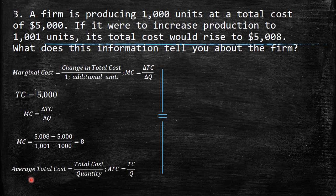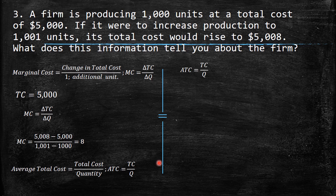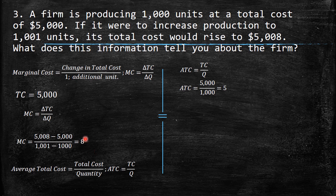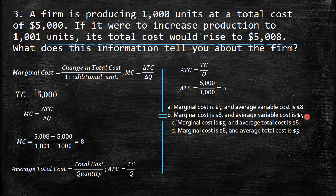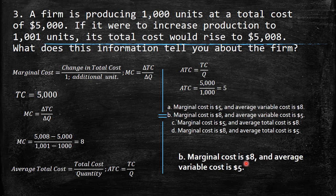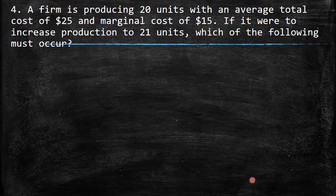For average total cost, ATC equals total cost divided by quantity: 5,000 / 1,000 = $5. So the marginal cost of the 1,001st unit is $8, and the average total cost at 1,000 units is $5. Looking at the options, we choose: marginal cost is $8 and average total cost is $5.